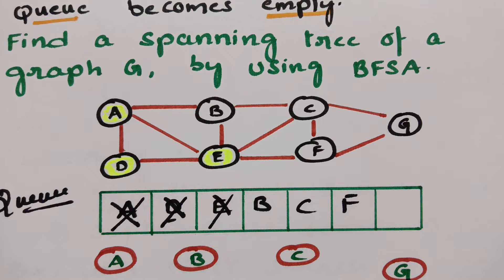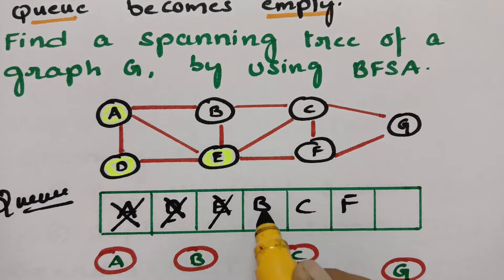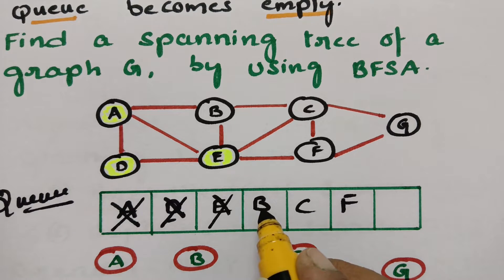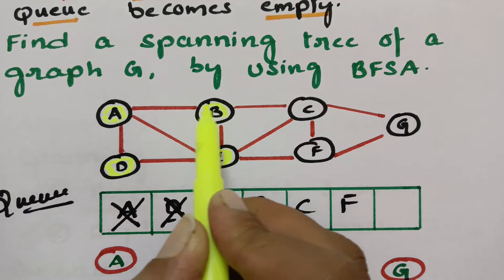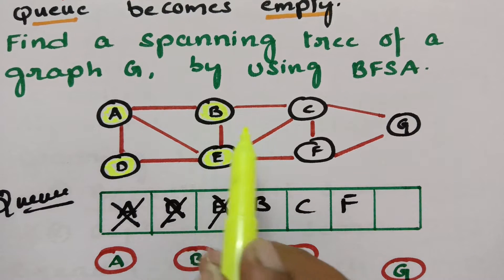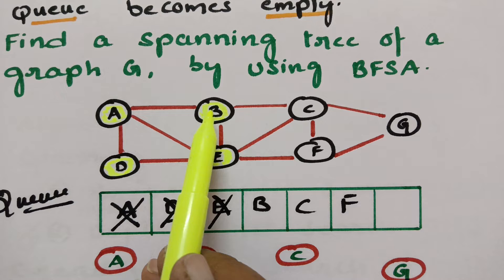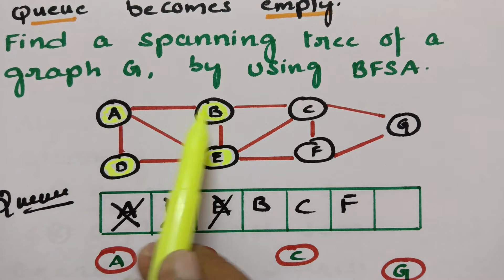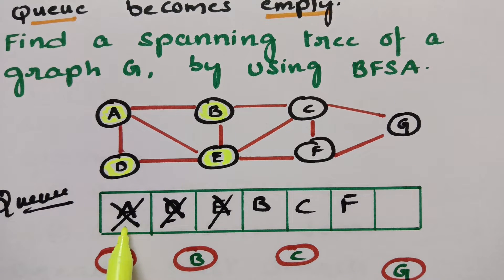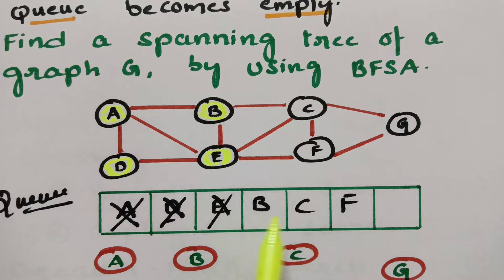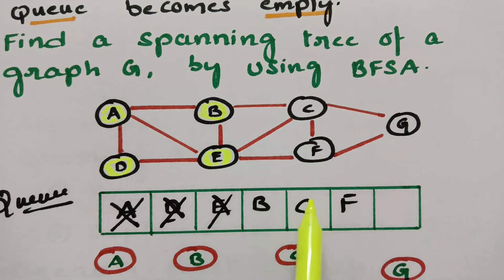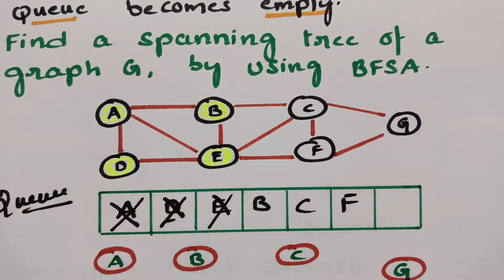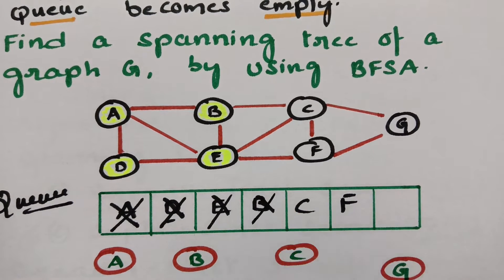The next vertex is B. I have to visit B. After visiting, I have to explore — how many adjacent vertices are there? A is already posted in the queue. E is already posted. C is already posted. So if it is explored and all neighbors are already posted, then delete B from the queue.